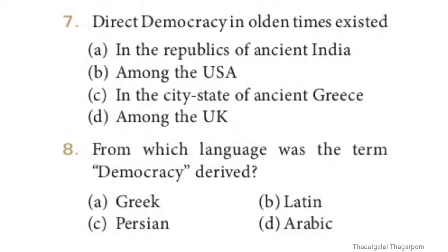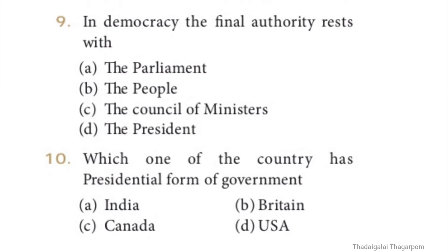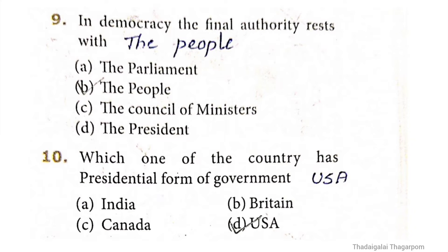Seventh question: direct democracy in olden times existed in the city state of ancient Greece. The correct answer is option A. Eighth question: from which language was the term democracy derived? The answer is Greek. Ninth question: in democracy, the final authority rests with the people - option B. Tenth question: which country has a presidential form of government? The answer is option D: USA.